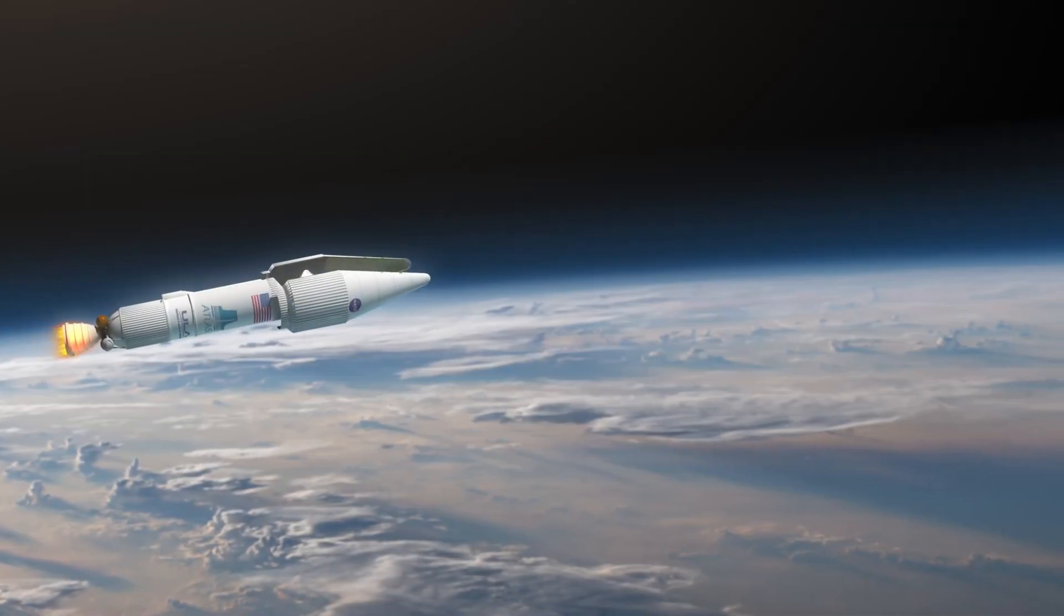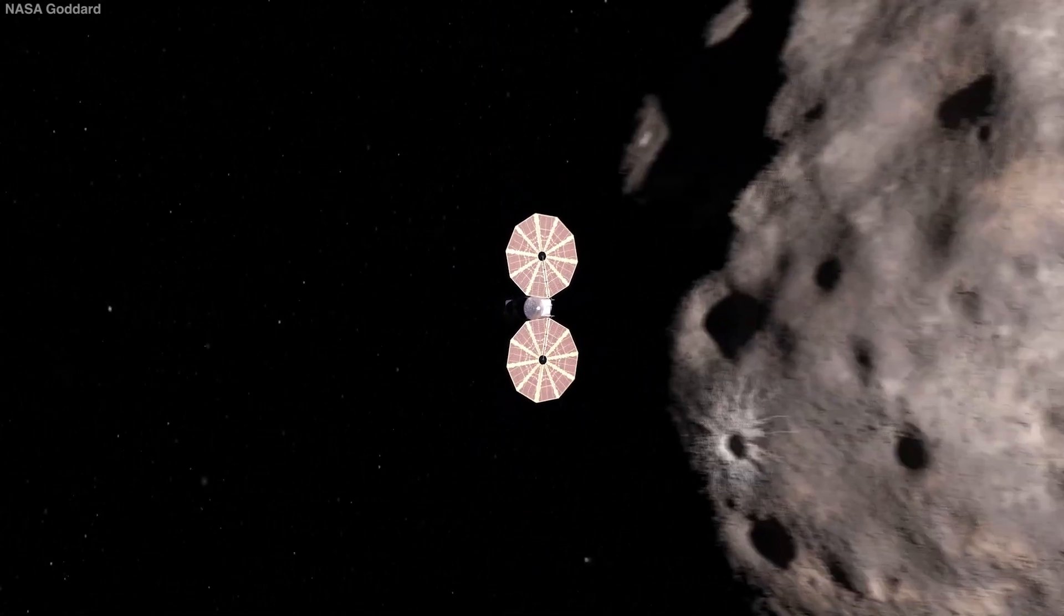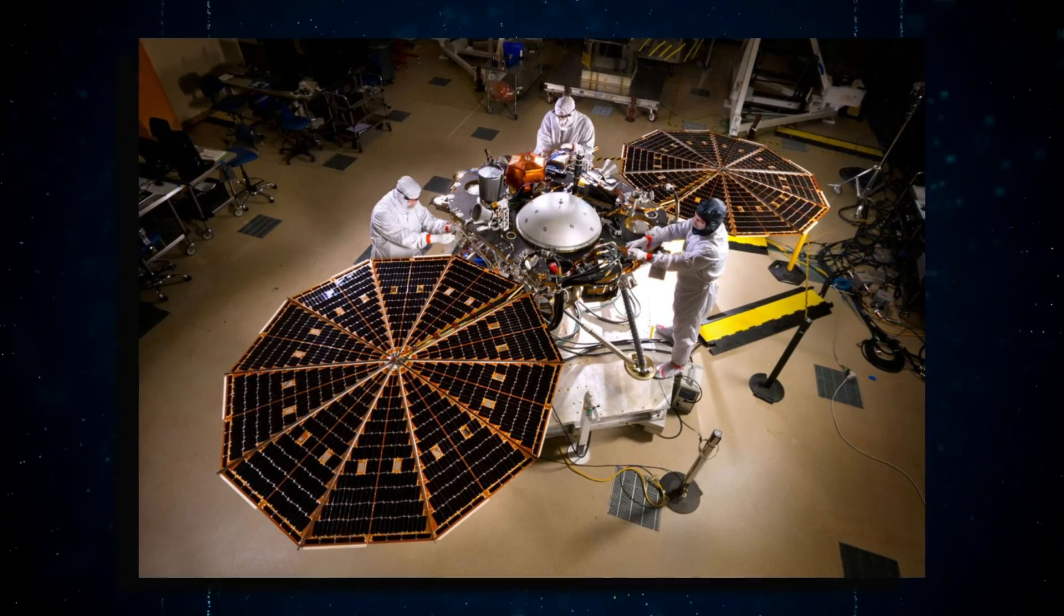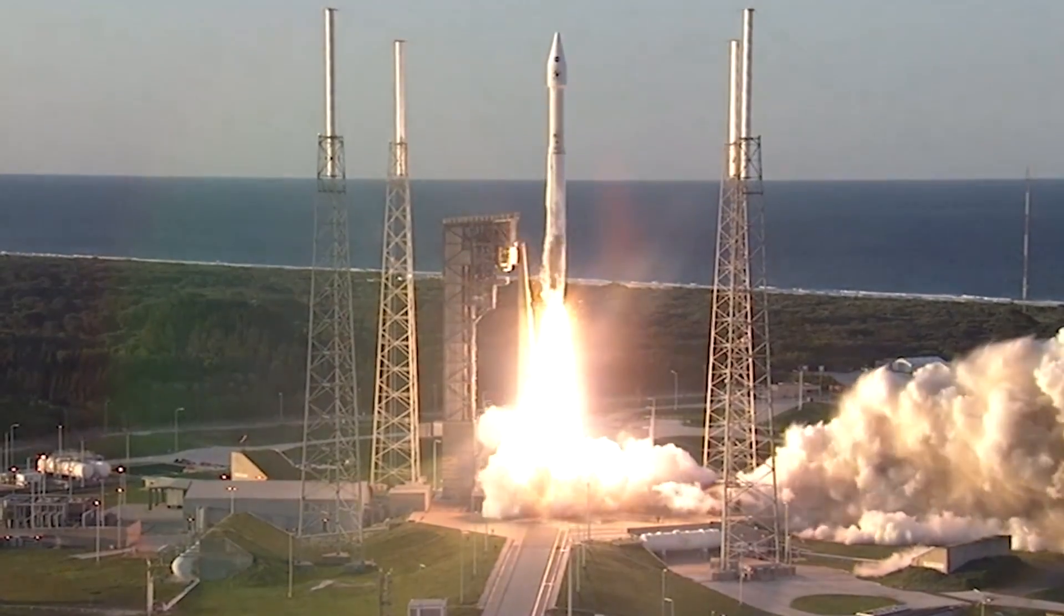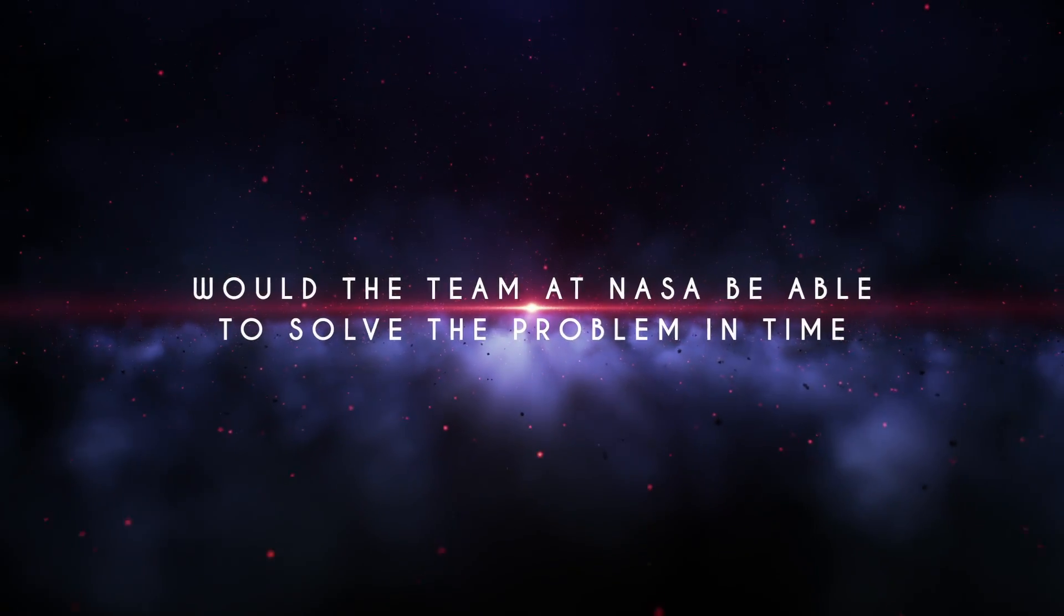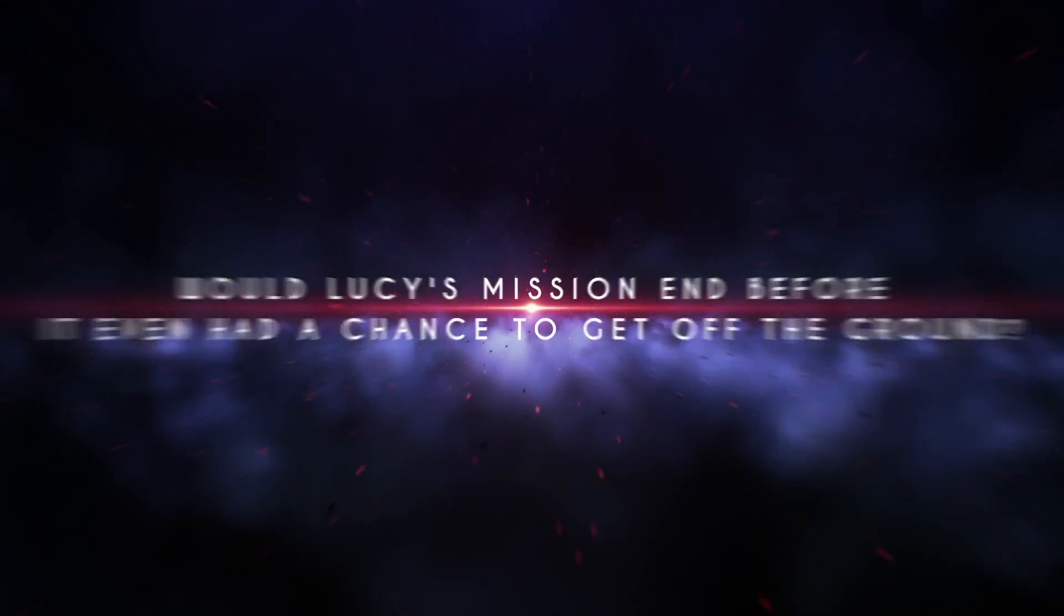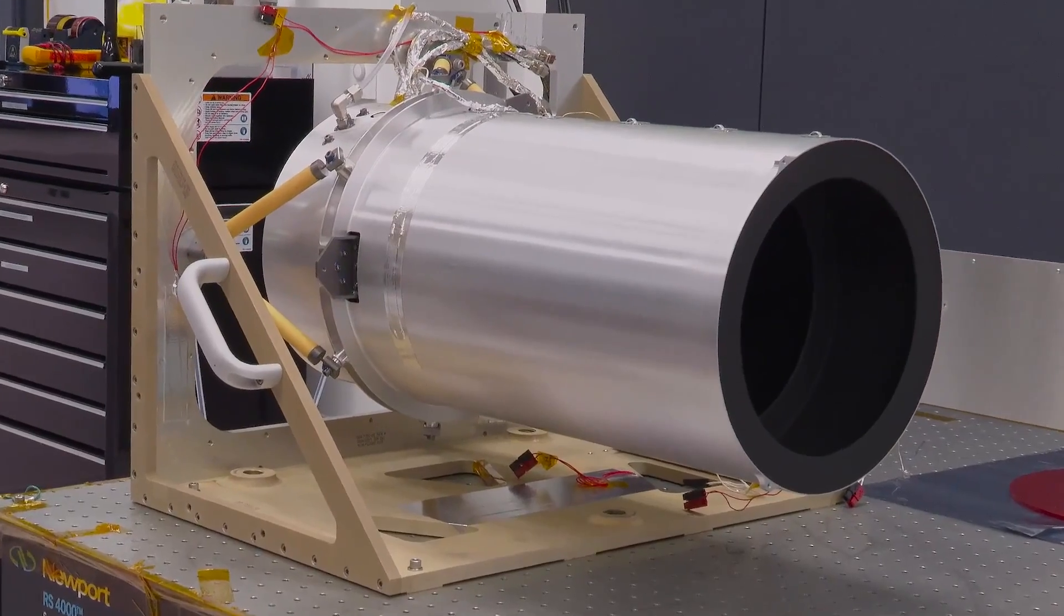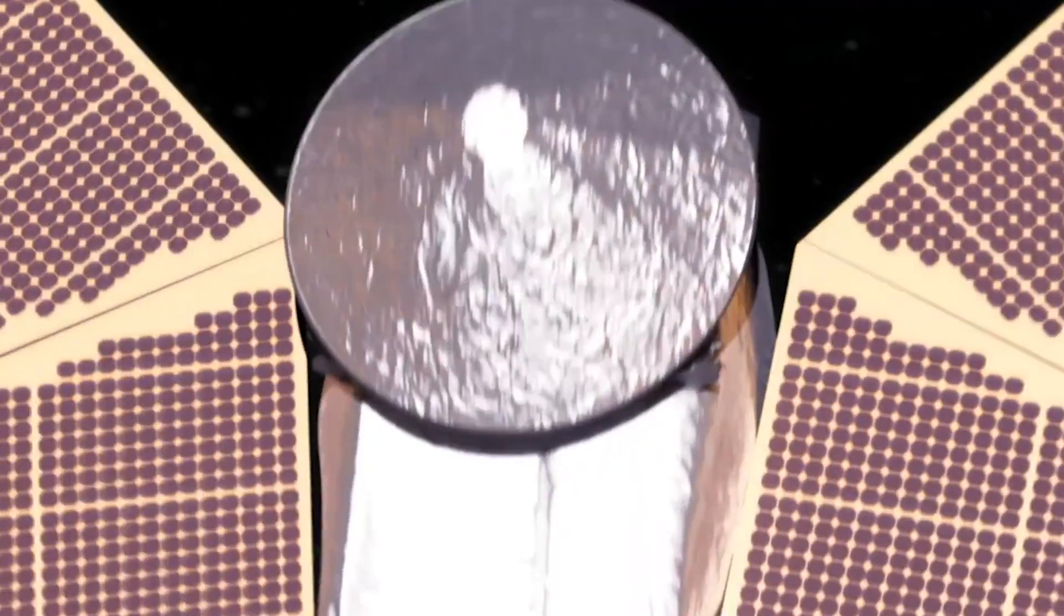But time was of the essence, and Lucy needed a solution before it reached the Trojans or attempted any major thruster burns. Without the full power of its solar panels, Lucy would be rendered useless, and the mission would be over before it even had a chance to begin. Would the team at NASA be able to solve the problem in time, or would Lucy's mission end before it even had a chance to get off the ground? It was a race against the clock to save this intrepid spacecraft and keep it on course for the historic journey to come.